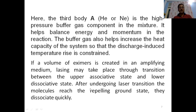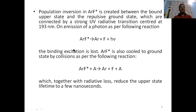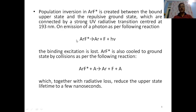If we have a volume of excimer as an amplifying medium, lasing may take place through the transition between the upper associative state and the lower dissociative state. After undergoing laser transition, the molecules reach the repelling ground state and dissociate quickly. Population inversion of argon fluoride is created between the bound upper state and the repulsive ground state, connected by a strong ultraviolet radiative transition centered at around 193 nm. On emission of a photon, ArF* gives way to Ar plus F in the dissociative state, and the binding excitation is lost.